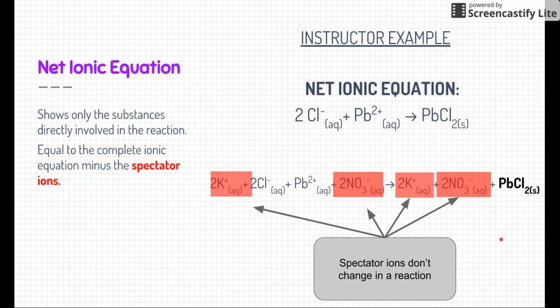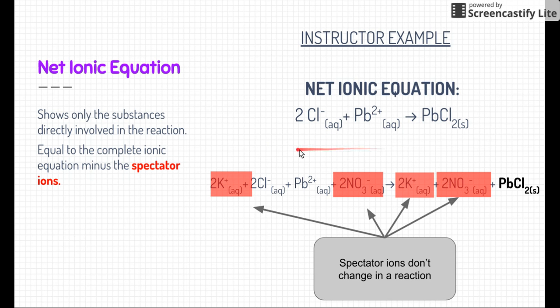To go from a complete ionic equation to a net ionic equation, we take out the spectator ions and write down what's left over: 2Cl⁻ plus Pb²⁺ gives you lead two chloride (PbCl₂). This is our net ionic equation. We know we did it right because everything is already balanced — these are the actual participants of our reaction.